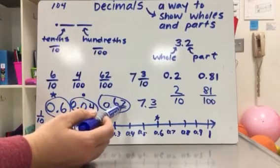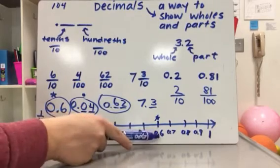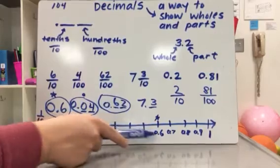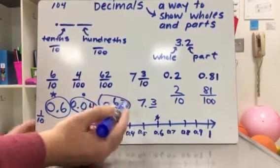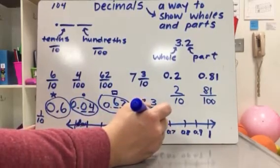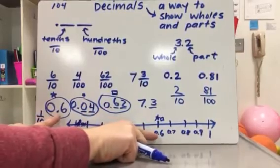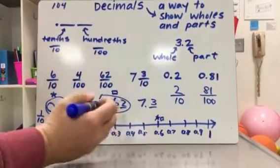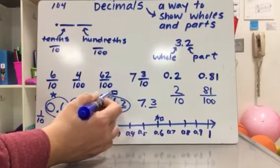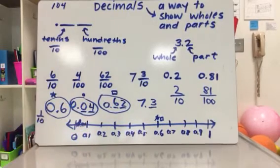Sixty-two hundredths — this is where you can think: it means six tenths and then a few extra hundredths. So it's a little bit past six tenths. I'll put a square for this one. Sixty-two hundredths is right there, a little past the six tenths mark, but with a few extra hundredths. This is where we were saying you can look at this as tenths and hundredths, or you can look at it as just hundredths — it depends on the scenario of what you're using the decimal for.